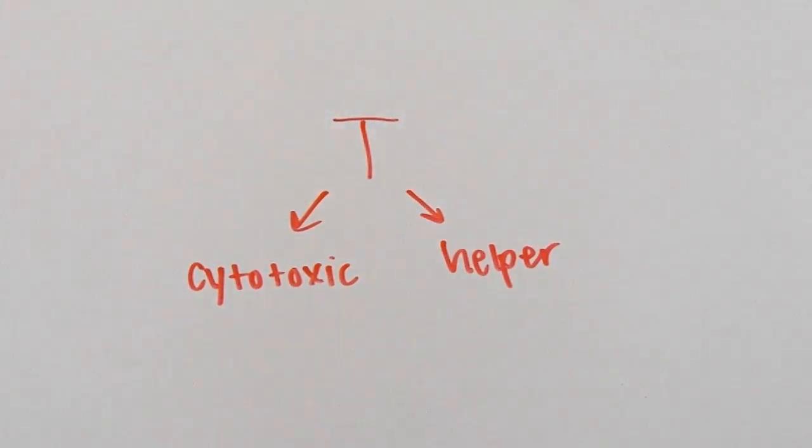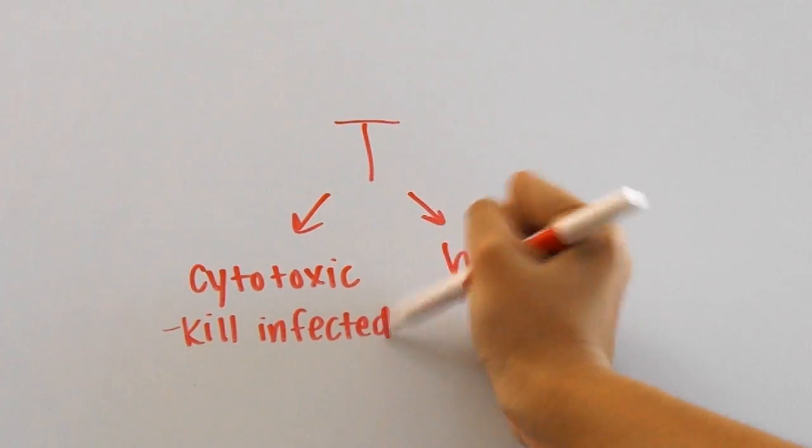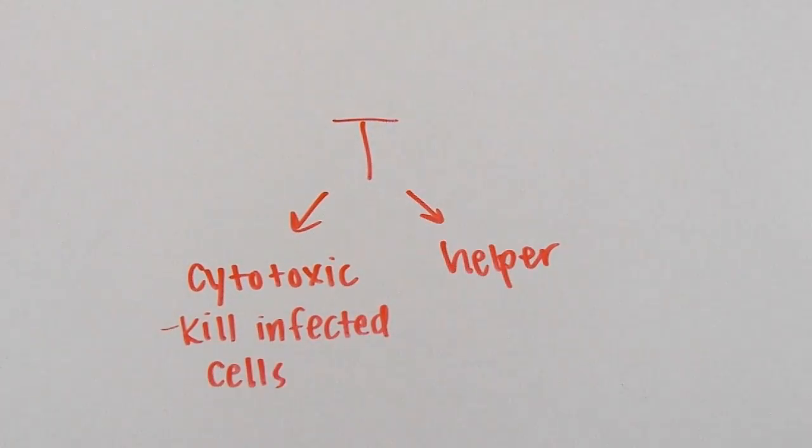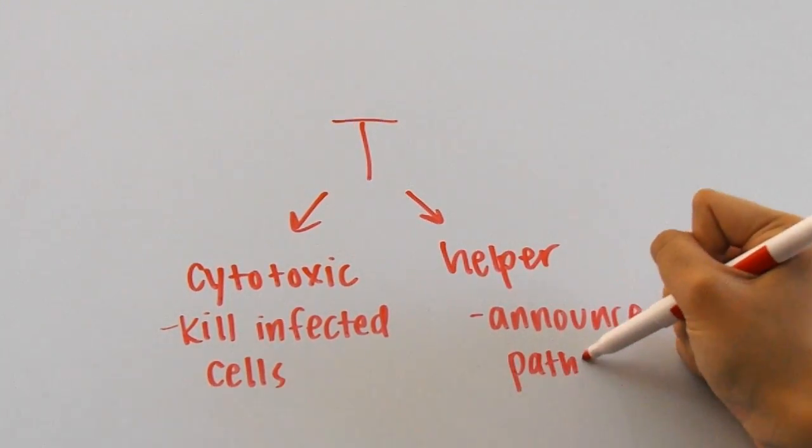Also, there are two types of T cells, cytotoxic T cells and helper T cells. Cytotoxic T cells kill infected cells and are the ones that release perforins. Meanwhile, the helper T cells are the ones that sort of announce and warn other cells that a pathogen is in the body.